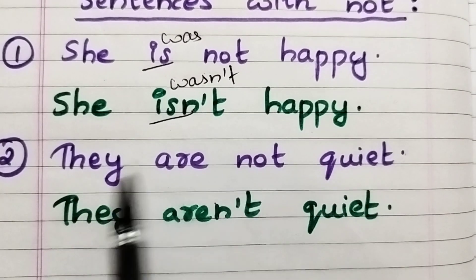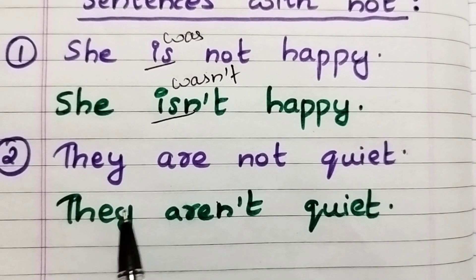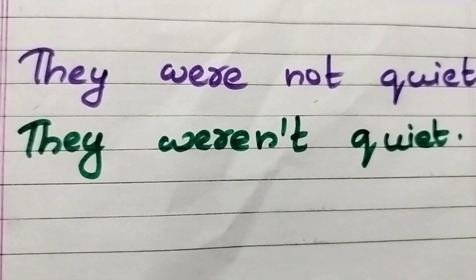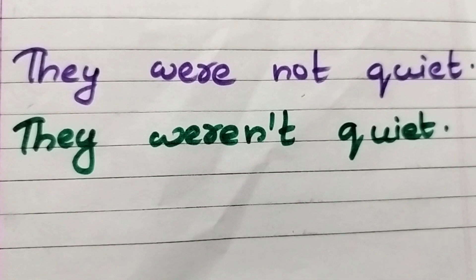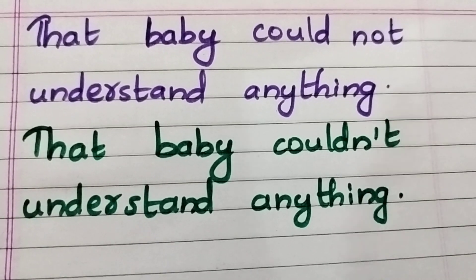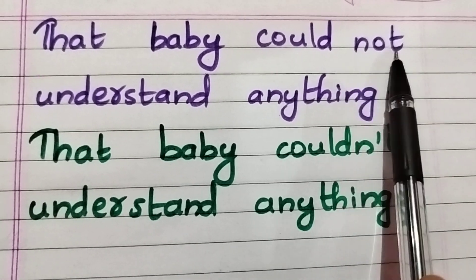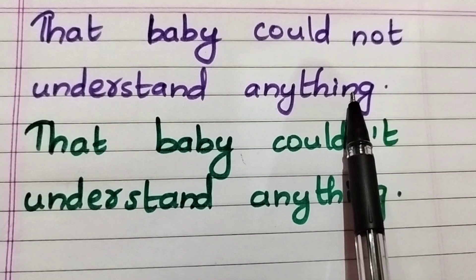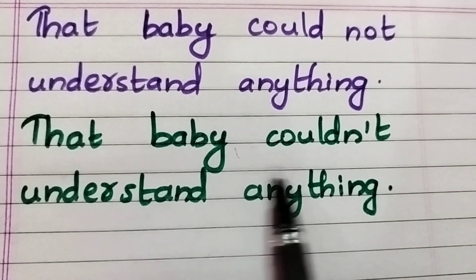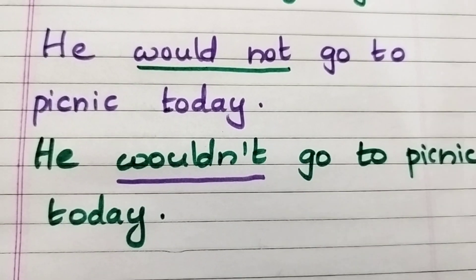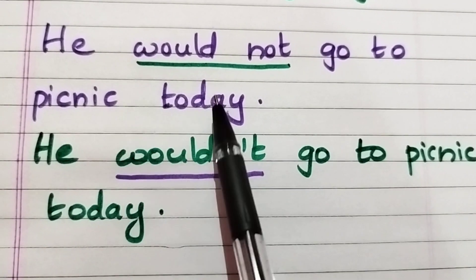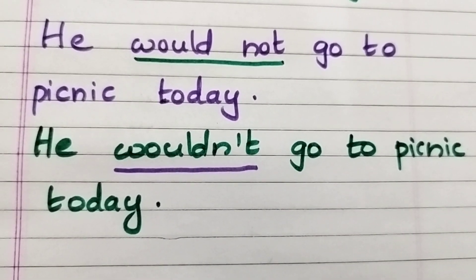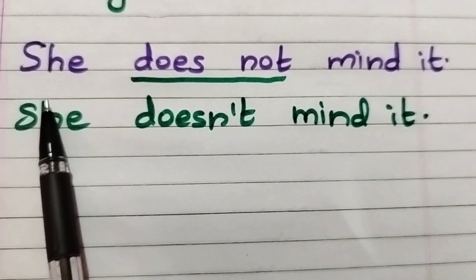'They are not quite' can also be written as 'They aren't quite.' You could also use the past tense: 'They were not quite' or 'They weren't quite.' Another example: 'That baby could not understand anything' or 'That baby couldn't understand anything.' Next: 'He would not go to the picnic today' or 'He wouldn't go to the picnic today.'